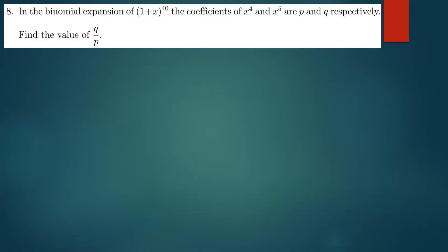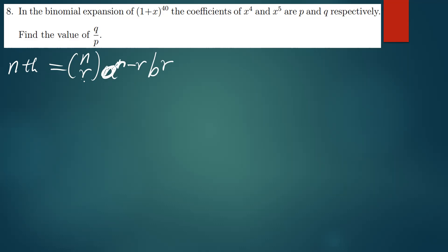They're saying the coefficients of x^4 and x^5 are p and q. We know that the nth term in any binomial expansion is given by nCr times a^(n-r) times b^r. In some books, r is sometimes represented by k, and a and b are sometimes represented by x and y.